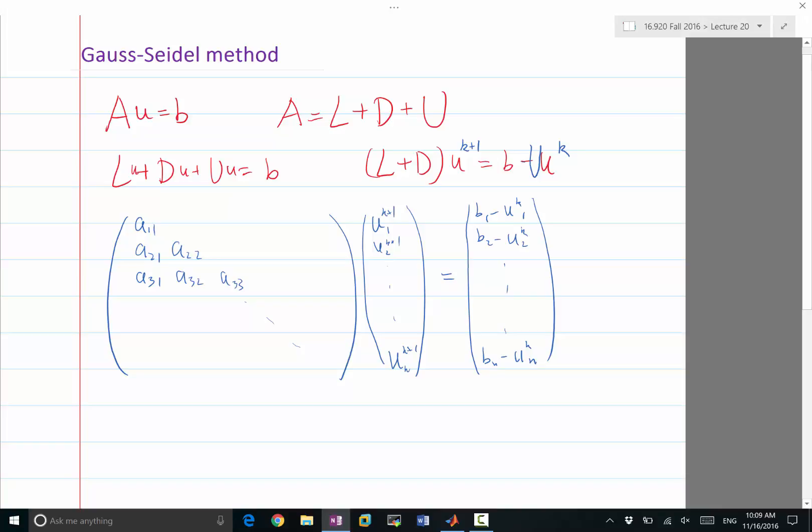So here we are, we already computed the Uu. So Uu is easy to compute because it's an explicit multiplication, right? So Uuk of 1, Uuk of 2. All of these entries are U times uk at the corresponding row of that vector. Now we have the right-hand side and we have a lower diagonal matrix. Where should we start?